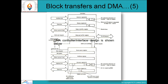This is the DMA controller interface design. Here we have the DMA controller and here we have the interface. This is address bus, data bus, and other control lines. This includes control register, status register, data-in buffer register, data-out buffer register, byte count register, and address register. These bits indicate direction of transfer — input or output — and a bit for enabling DMA.